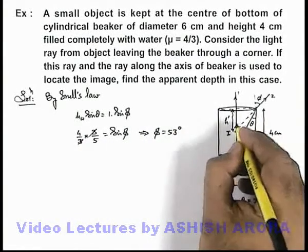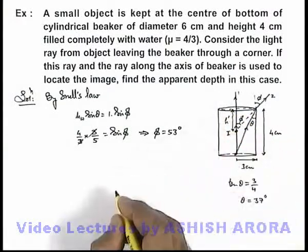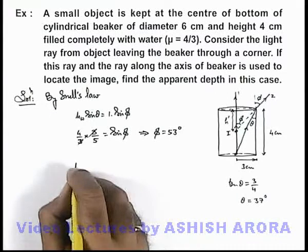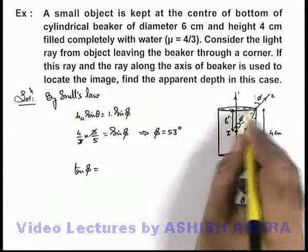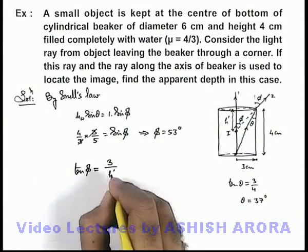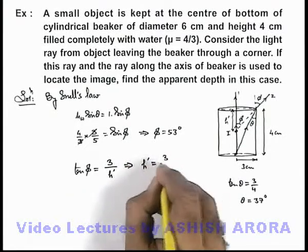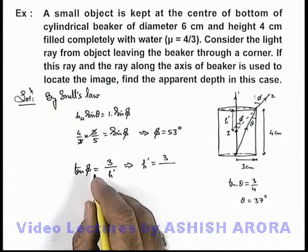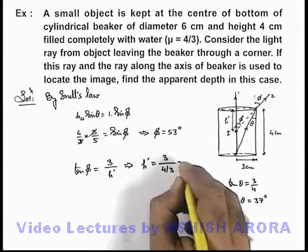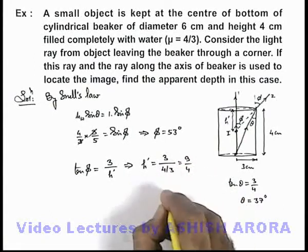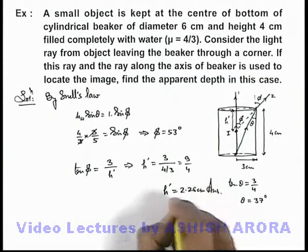Now that we know the value of angle phi, we can directly calculate h prime using this triangle. We write tan phi equals the radius 3 divided by h prime. This implies h prime equals 3 divided by tan phi. Since tan 53 degree equals 4 by 3, we get h prime equals 3 divided by (4/3), which is 9 by 4. So the value of the apparent depth is 2.25 centimeter, which is the answer to this problem.